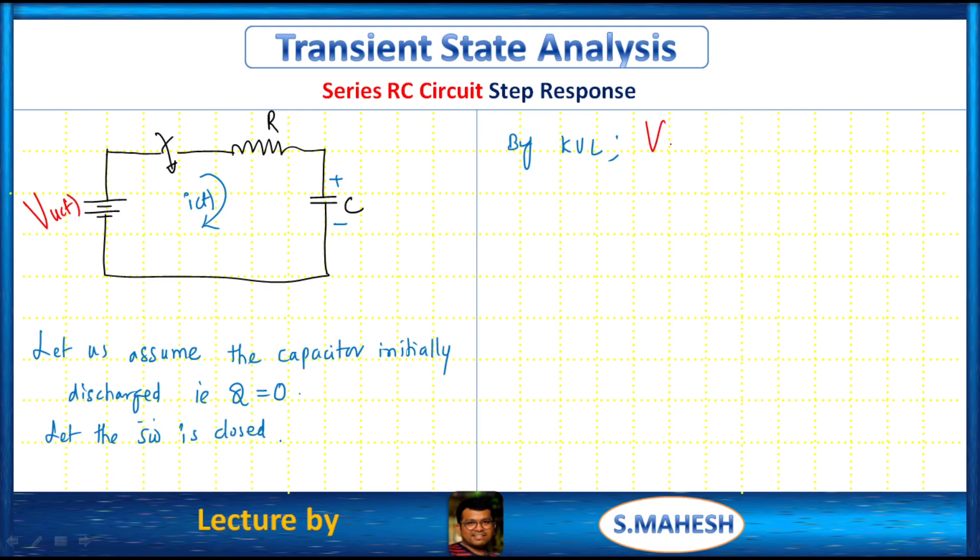By KVL we have V into U of t which equals R into I of t plus coming to capacitor it is 1 by C integral I of t dT.